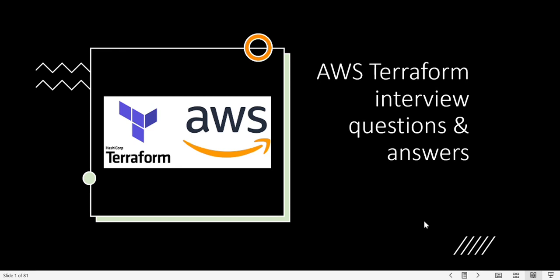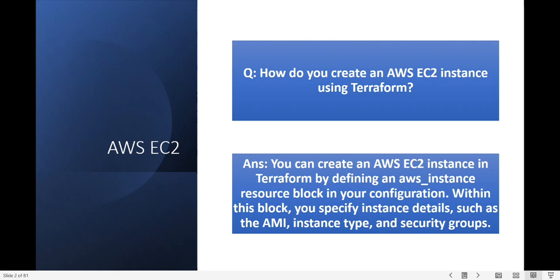Hi friends, today we will discuss AWS Terraform interview questions and answers. The first question is: how do you create an AWS EC2 instance using Terraform? You can create AWS instances in Terraform by defining the AWS instance resource block in your configuration. Within the block you can specify instance details such as AMI, instance type, and security groups.